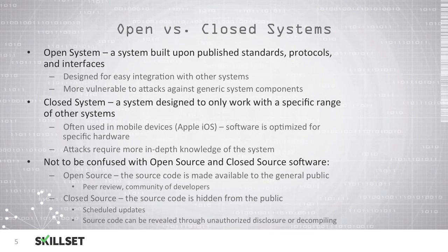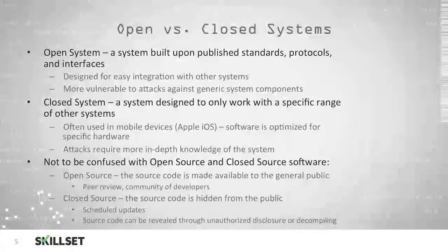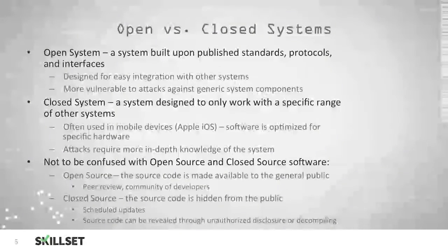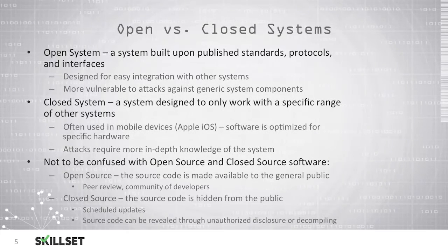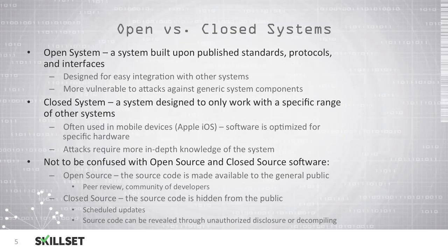This should not be confused with open source versus closed source software. Open source software allows the source code to be made available to the general public so that others can peer review the software and developers can work together in a community. Closed source software does not allow their source code to be given out to the public; however, the source code can still be revealed through unauthorized disclosure or decompiling. Typically with closed software, updates are scheduled and you can only install updates once the developer decides to release them to you.